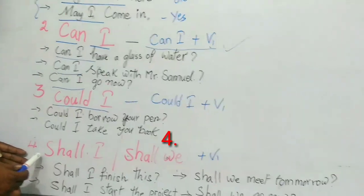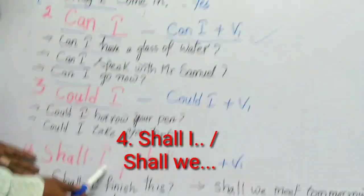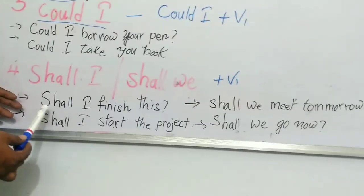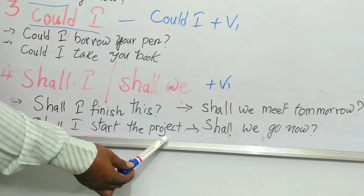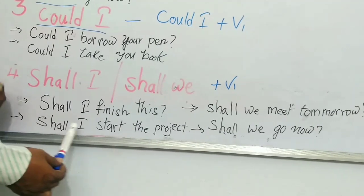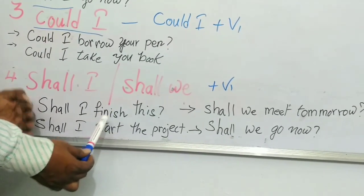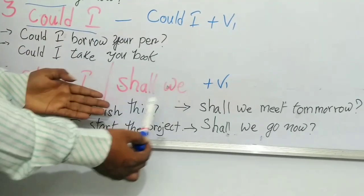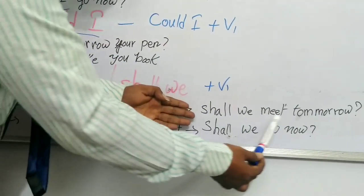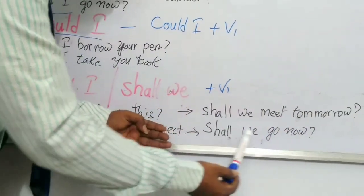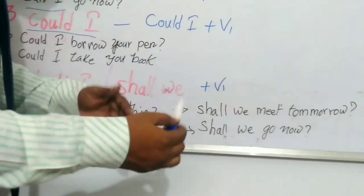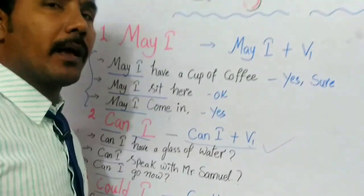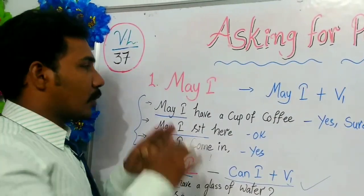Last we move on to the final method - that is called Shall I or Shall We. Examples: Shall I finish this? Shall I start the project? Shall I go? When we use 'we' instead of 'I': Shall we meet tomorrow? Shall we go now? Shall we finish the project? This is how we use it in daily usage.